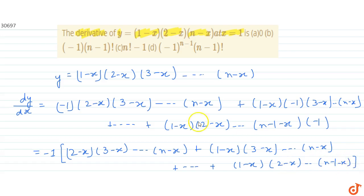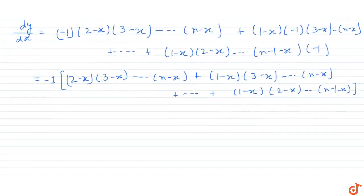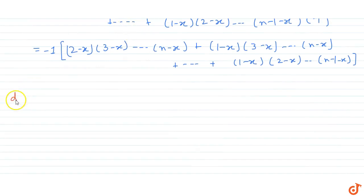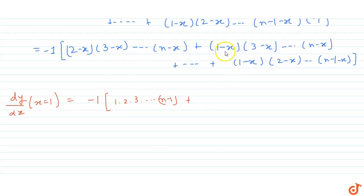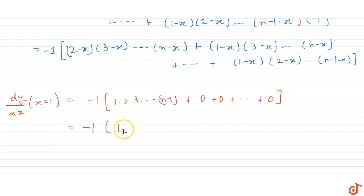Now we find the value of the derivative at x equals 1. dy by dx at x equals 1 equals minus 1 times: substituting x=1 in the first term gives (2 minus 1)(3 minus 1)...(n minus 1) = 1 × 2 × 3 × ... × (n minus 1). Every subsequent term contains the factor (1 minus x), which equals 0 when x equals 1, so all those terms become 0.